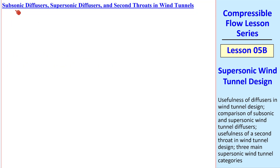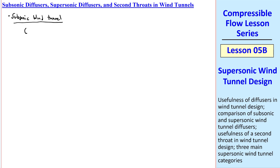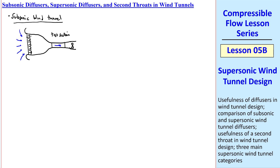First, let's review subsonic diffusers. Consider a subsonic wind tunnel — I've built a couple like this — where flow gets sucked in at the inlet. We go through a honeycomb and a screen, and then the flow goes into the test section, where your goal is to have high-speed, uniform flow. Then you have a blower or a fan.